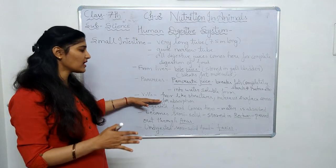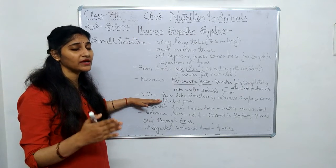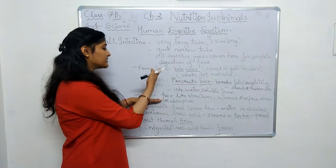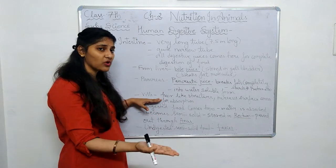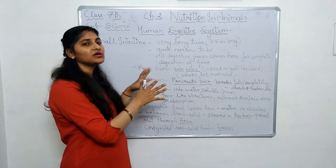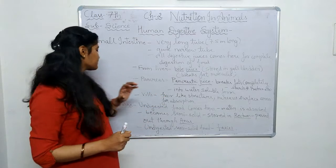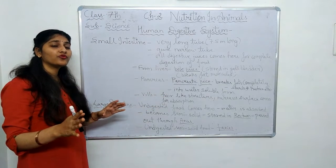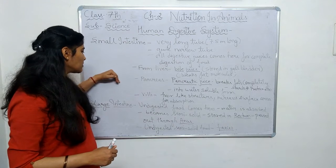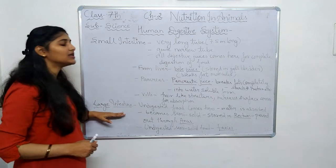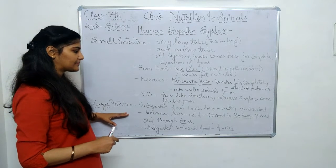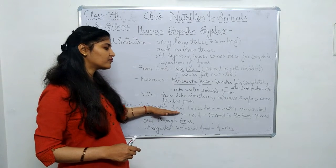Every food particle has been broken down and the nutrients have been absorbed. The nutrients absorbed by the inner lining of the small intestine and through the villi go directly into the bloodstream. The rest of the undigested food goes from the small intestine to the large intestine.